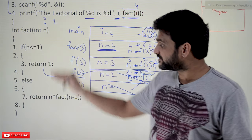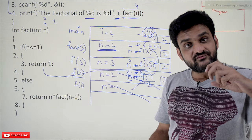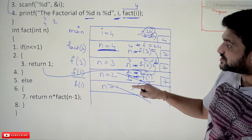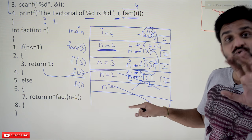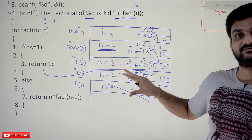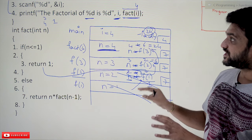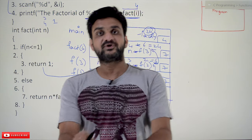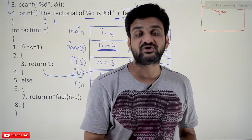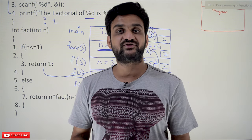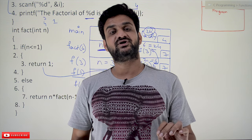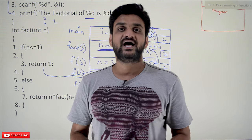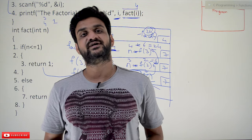A function calling itself — we were able to find the factorial. That is done because of how a program gets executed using a process. So this is all about recursive functions — a recursive function means a function calling itself. Hope you got clarity on this concept. Thanks for watching. If you haven't subscribed to our channel, please subscribe and press the bell icon for the latest updates. If you have any doubts, post them in the comment section below. If this video was helpful, please give us a like and share it with your friends so they will also get benefited. Thanks for watching.